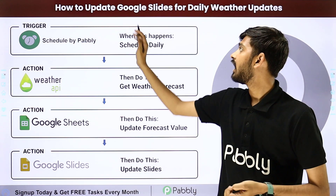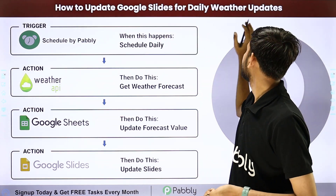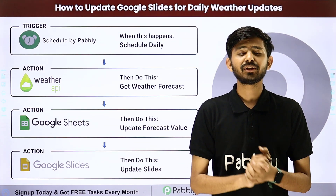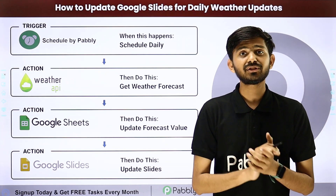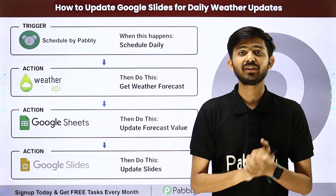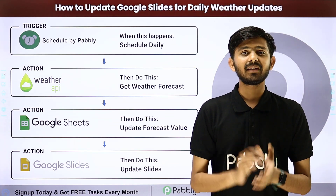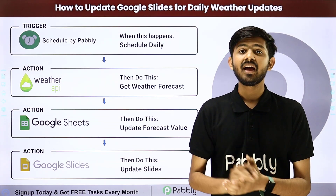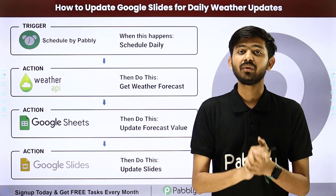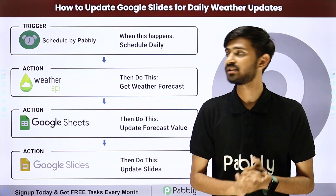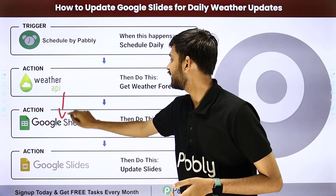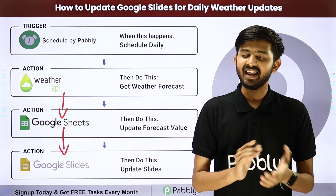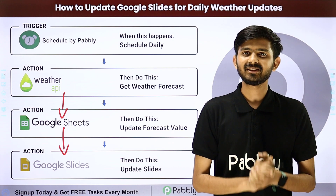Hello everyone, today our topic is how to update Google Slides for daily weather updates. I want to get daily weather updates, so I'm going to schedule my workflow for daily. After scheduling, I'm going to get daily forecast reports by using weather API, then update those forecast values in my Google Sheet and also update my Google Slides automatically. For that I have to build a connection between weather API, Google Sheets, and Google Slides, and I'm going to use Pabbly Connect, which is an amazing software for automation and integration.